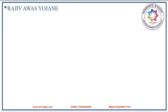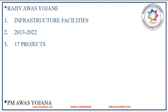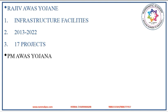Rajiv Aas Yojana was introduced on the lines of Indira Aas Yojana during 2009-10 to make the country slum-free by providing infrastructure facilities to slum dwellers. It will be enforced from 2013 to 2022, with the main objective of creating dignified, healthy and productive living conditions for all slum dwellers. Among 40 projects sanctioned to Karnataka, 17 projects have been taken up. Karnataka Government has also launched the Powrakarmikas Griha Bhagya Yojana in 2014-15 for providing housing to eligible permanent Powrakarmikas of the state.